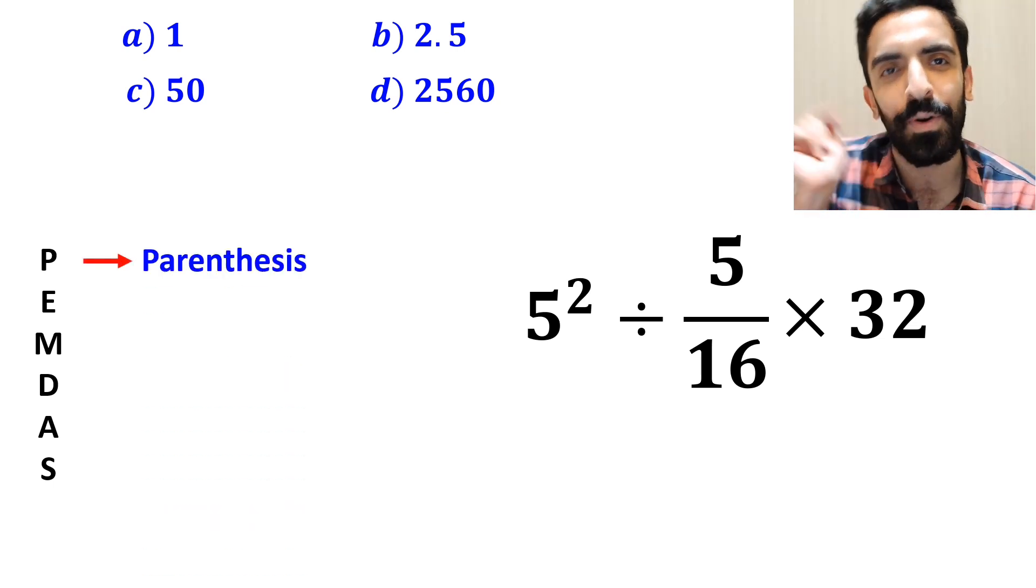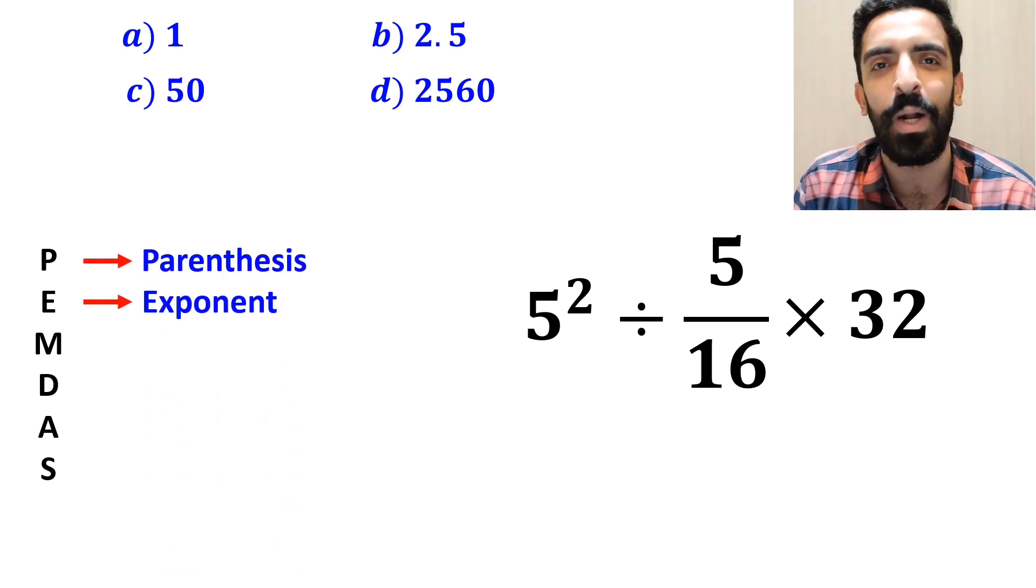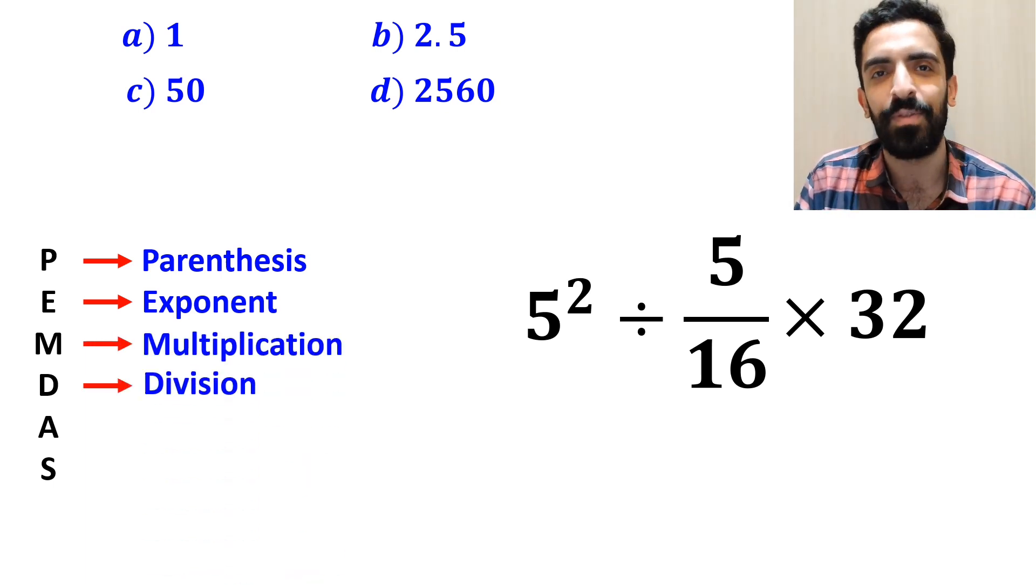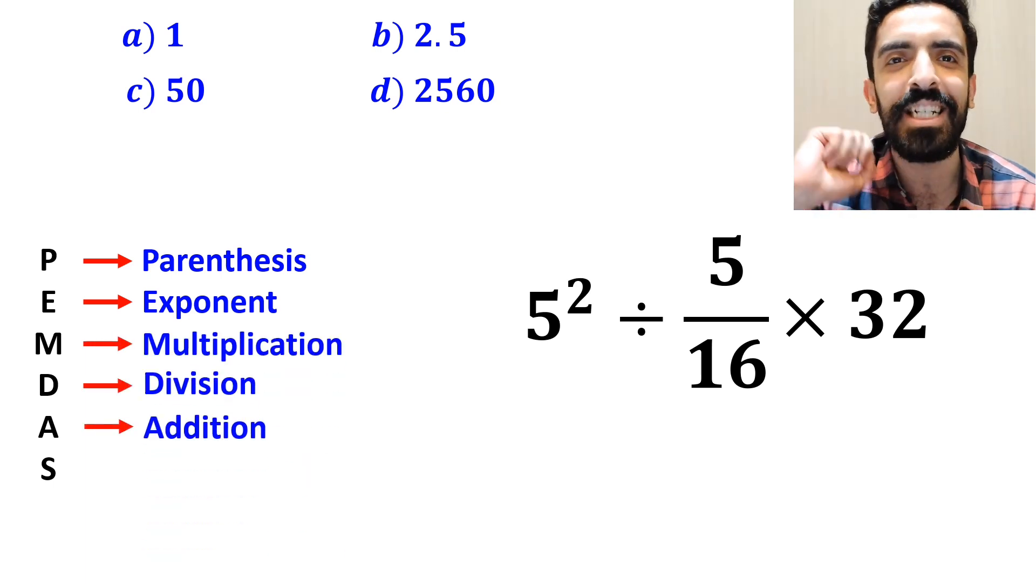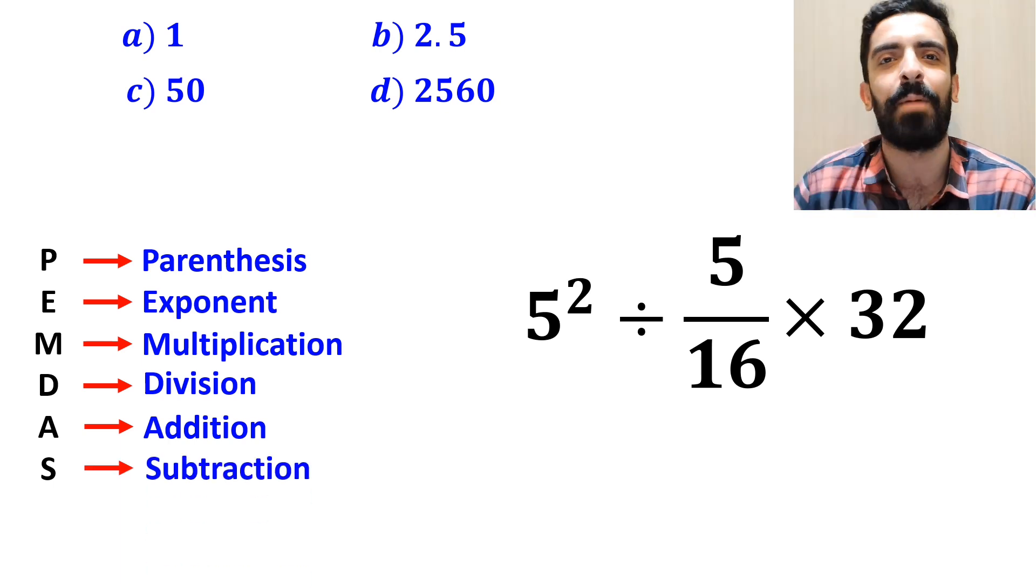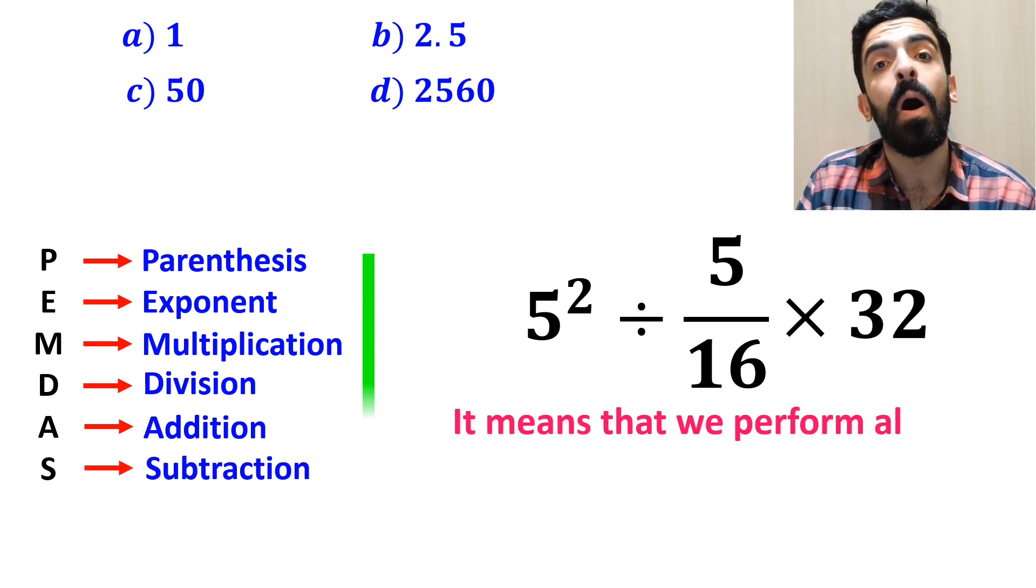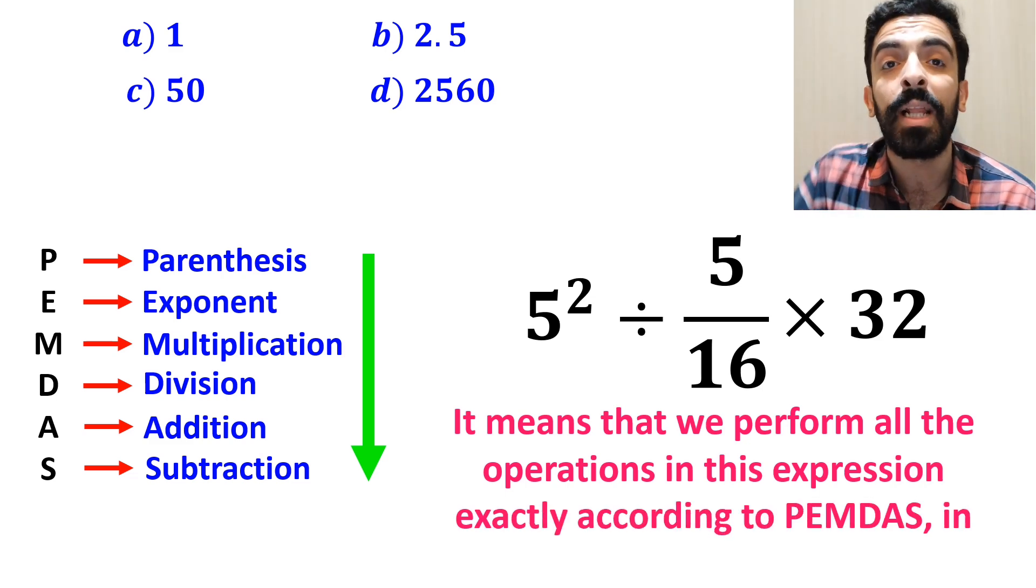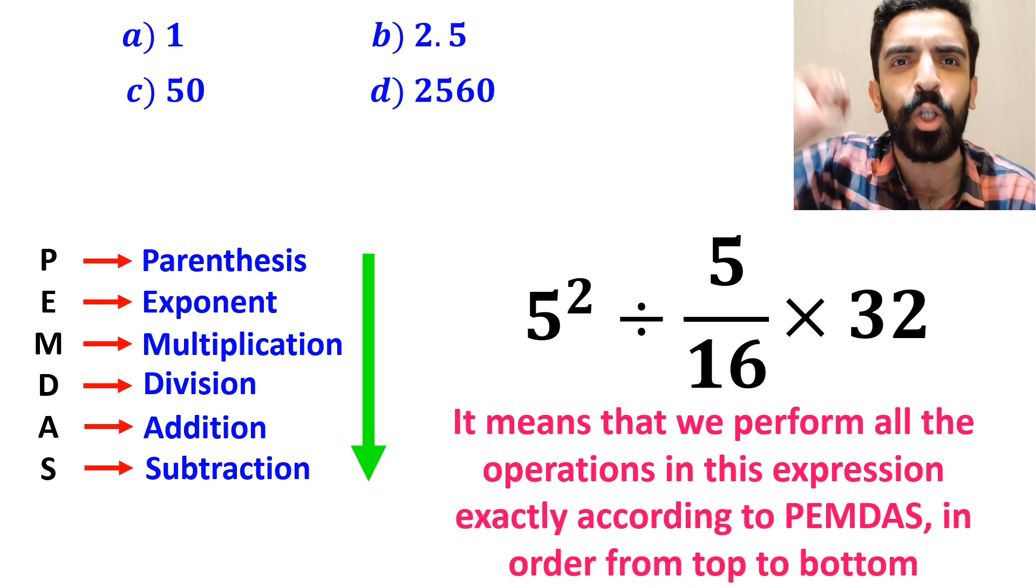In this rule, P stands for parentheses, E stands for exponent, M stands for multiplication, D stands for division, A stands for addition, and S stands for subtraction. It means that we must perform all the operations in this expression exactly according to the PEMDAS rule, in order from top to bottom.